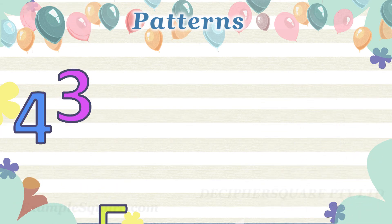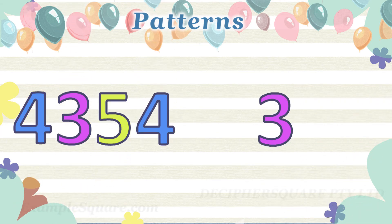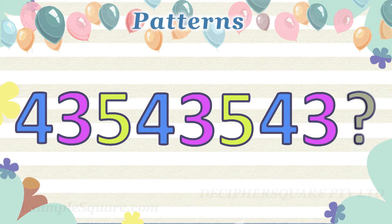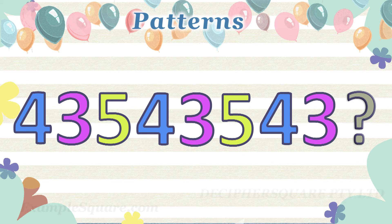Here is one more similar pattern example with numbers: 4, 3, 5, 4, 3, 5, 4, 3. What should come next? In this pattern, there are three numbers: 4, 3, and 5. Here 3 comes after 4, and then 5 comes after 3, and then the three numbers repeat. So here, 5 should come next.